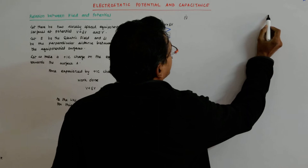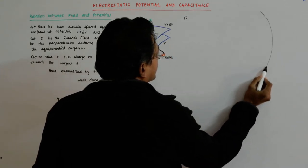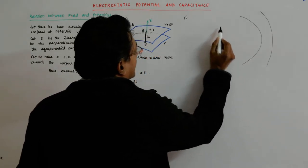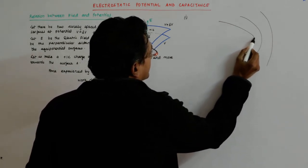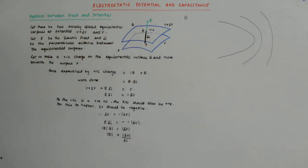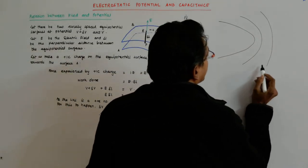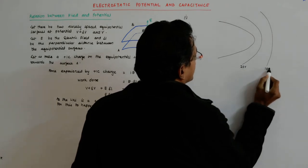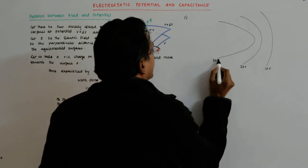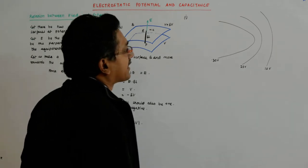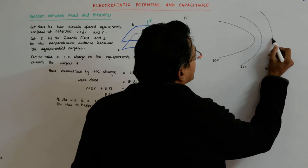Suppose I have these as the cross-section of, say, this is an equipotential surface. Say this is another equipotential surface. Say this is another equipotential surface. Let us say this is 10 volts, this is 20 volts, and this is 30. And someone asks me: what is the direction of electric field at this point?